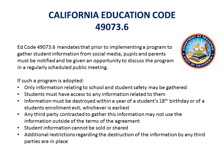Ed Code 49073.6 is related to student information collected from social media. If a district wants to begin culling social media for posts by and about their students, parents and students must be notified ahead of time and given the opportunity to discuss the proposal. If such a program is implemented, the information it can retrieve is limited to school and student safety issues.